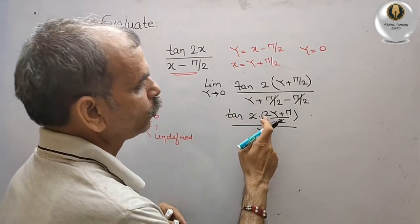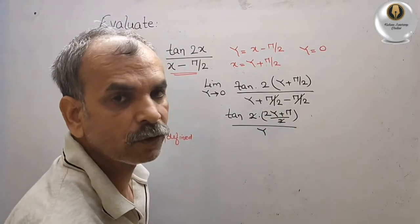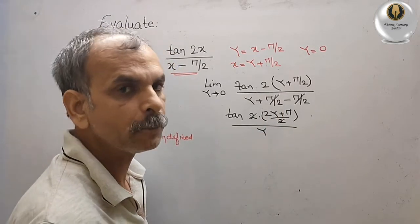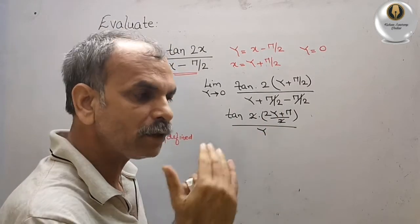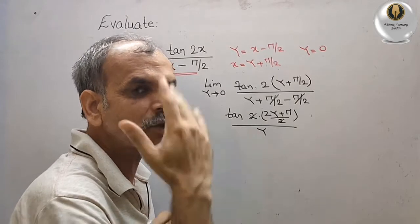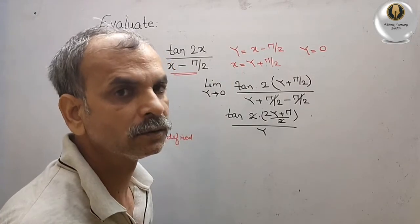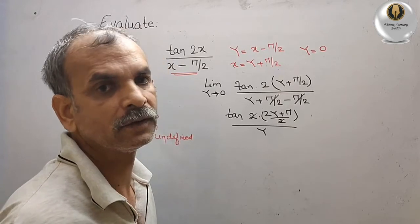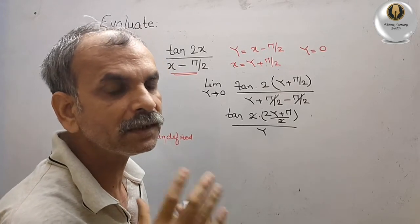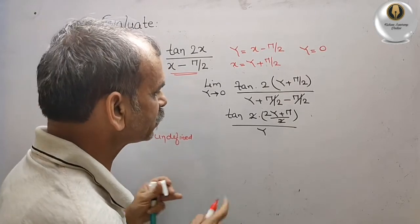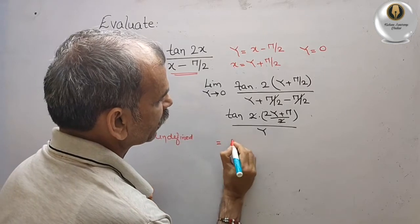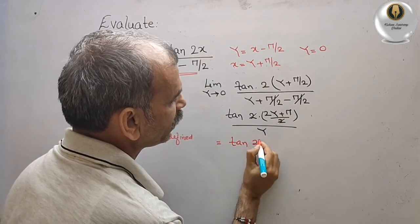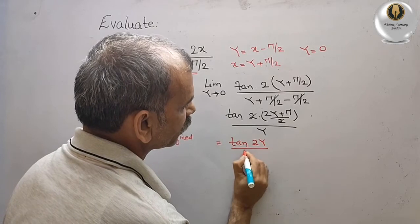Now, tan(π + 2y) = tan(180° + 2y), which equals tan(2y) since tan has a period of 180°. So the expression simplifies to tan(2y) / y.